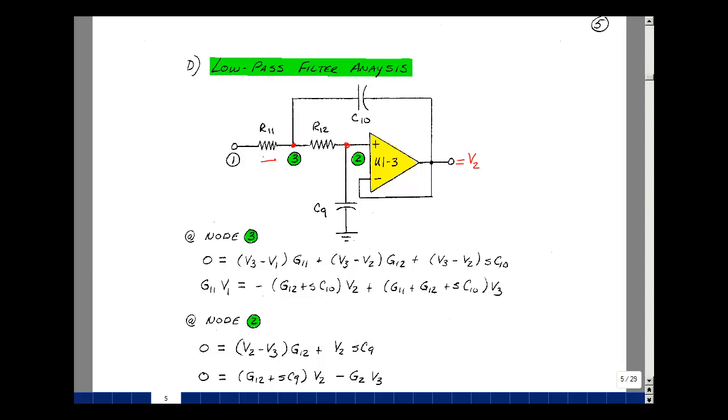I actually made all the currents leave the node. So the current in this direction and this direction have to sum up to zero. So what's the current going this way? Well, it's this node voltage V3 minus V1 divided by R11 or times G11. The current in this resistance is V3 minus V2 divided by R12 or times G12. And the current going in here is V3 minus V2 divided by 1 over SC10, or just multiplying by SC10.